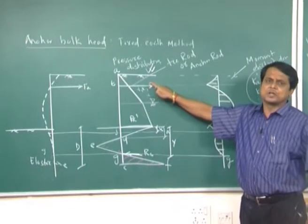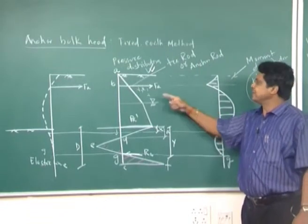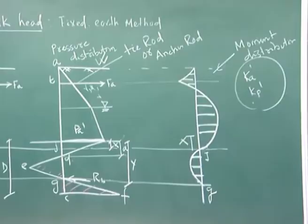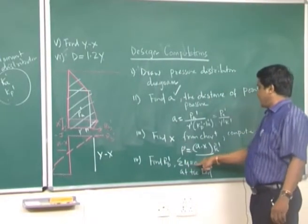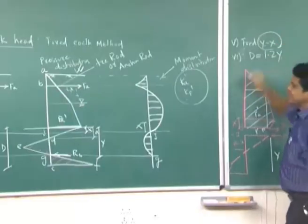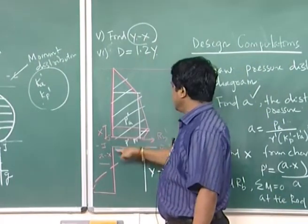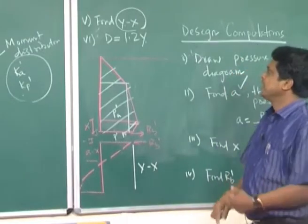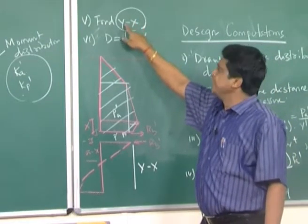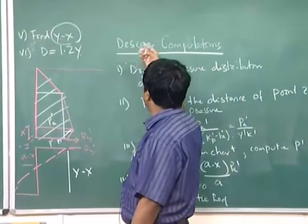Once you draw the diagram and moment about the anchor rod equals 0, you can find R_B prime. Then find distance y minus x. Knowing R_B prime and y minus x, you can find the distance d. Once you know y minus x and you know x, you find y, and then d equals 1.2 times y. This is the computational procedure.